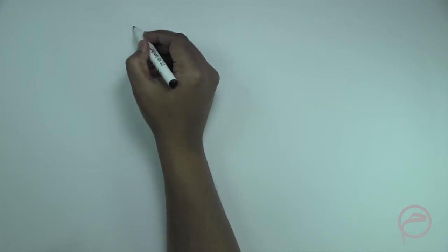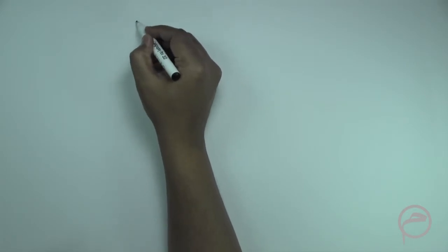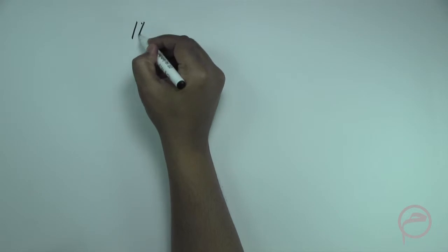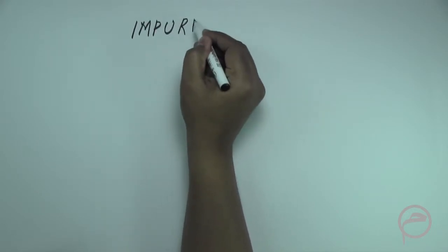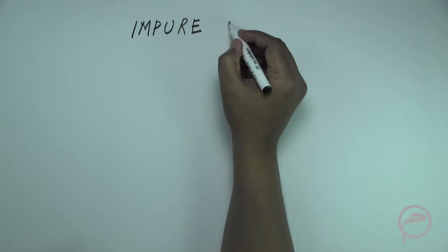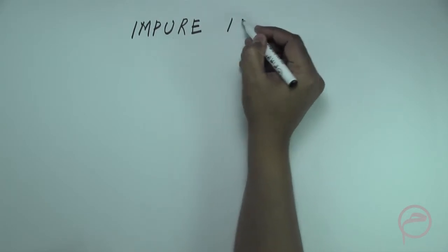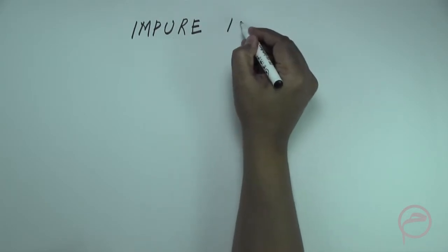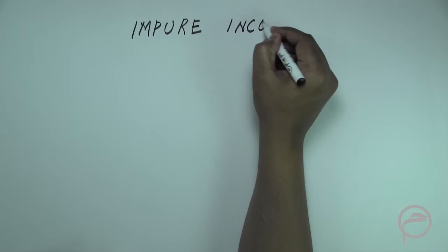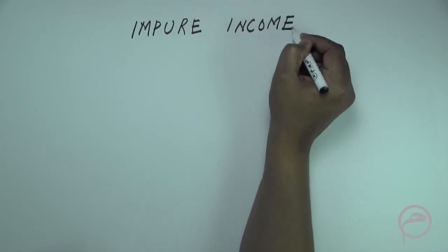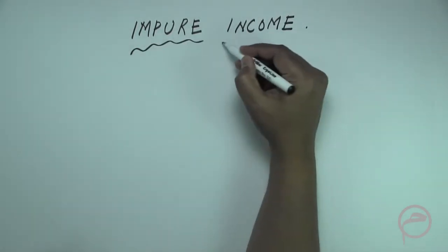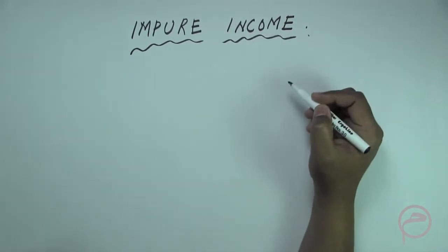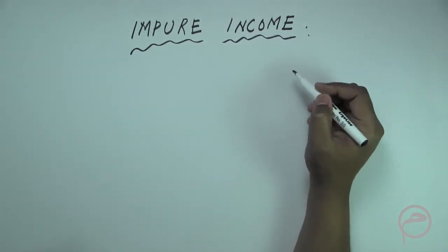Now let us discuss about impure income. This is the first financial screening which we will discuss.